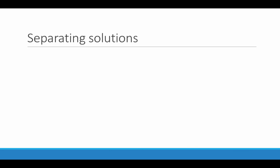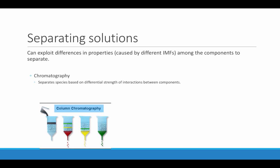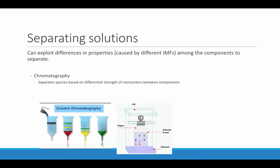Since particle size for solvent and solute in solutions is too similar to use filtration, there are two other processes we can use to separate the solvent from the solute. These processes exploit the differences in properties caused by different intermolecular forces among the components. First is chromatography, which separates the solvent from the solute based on different strengths of interactions between the components. Column chromatography and paper chromatography are the most common. The components are separated because they are attracted to different degrees to either the substance in the column or the paper itself.